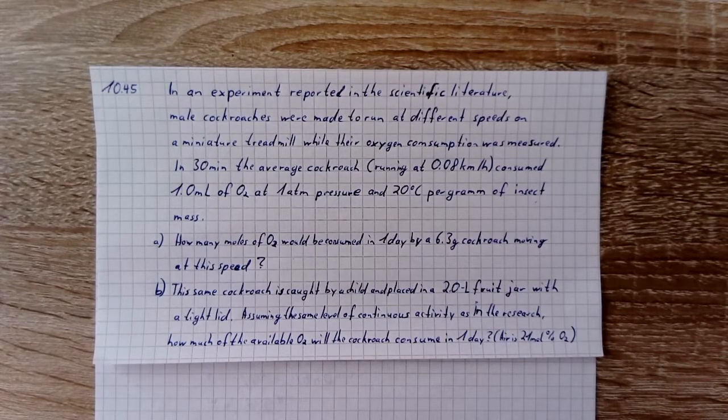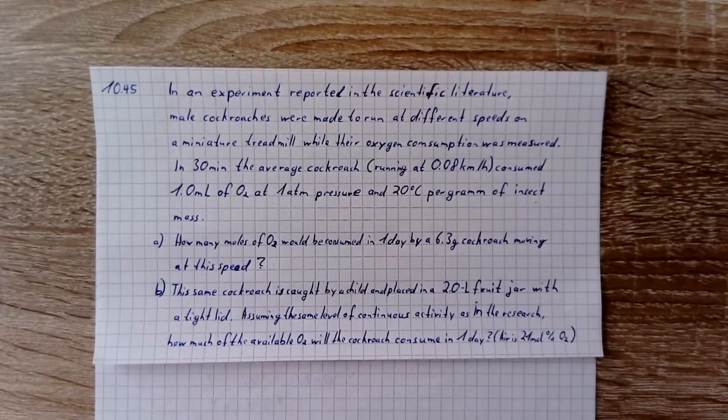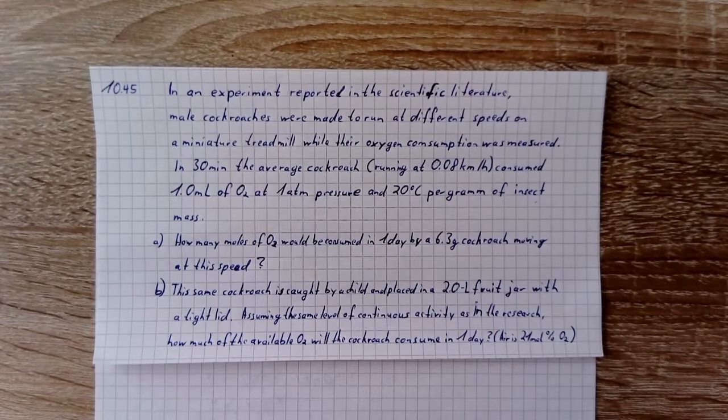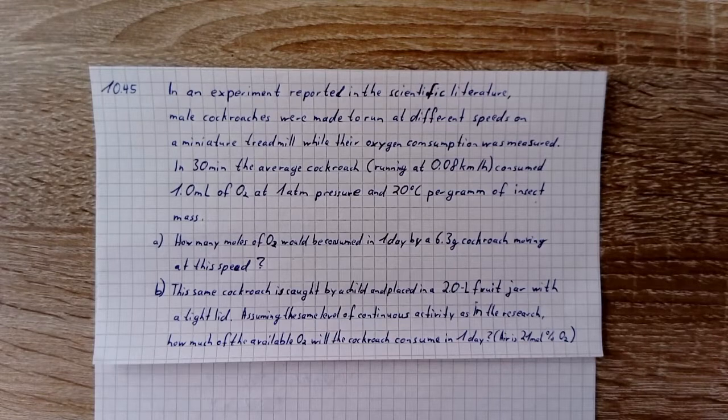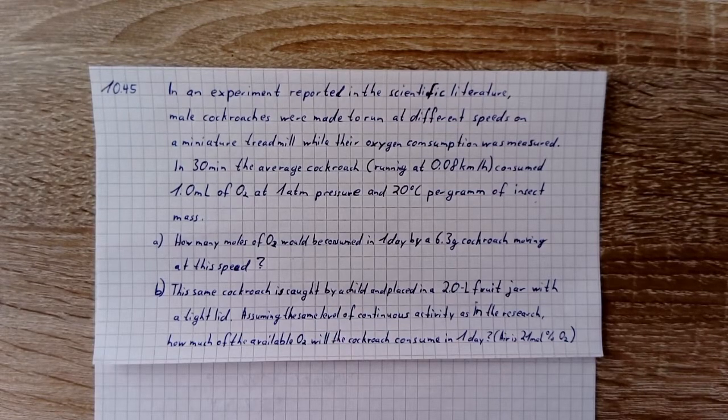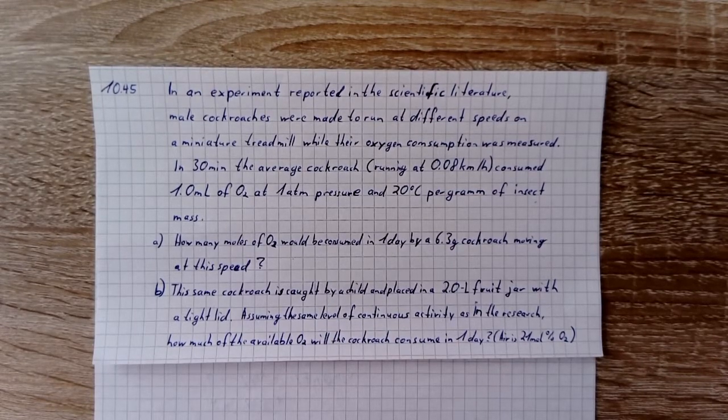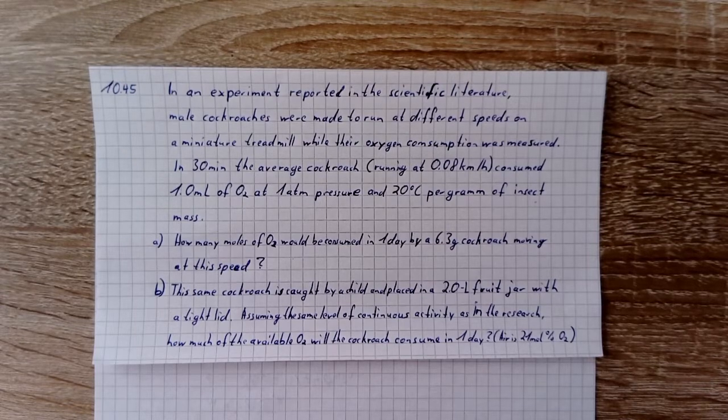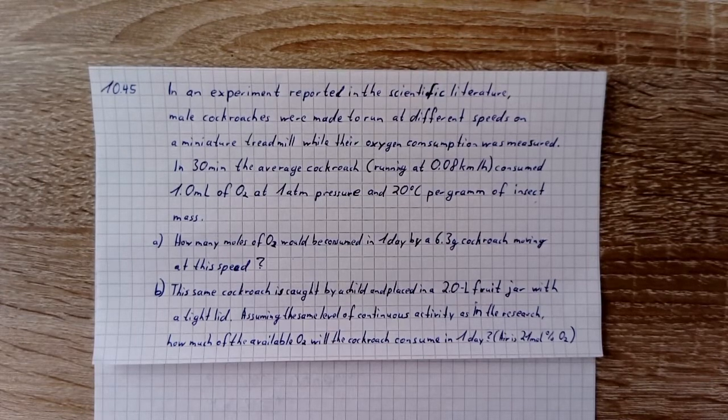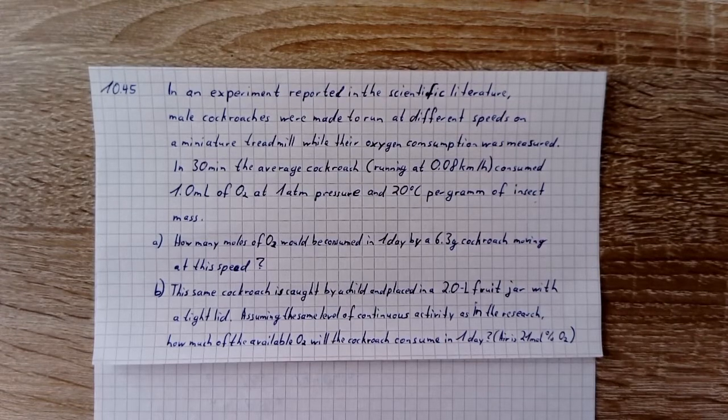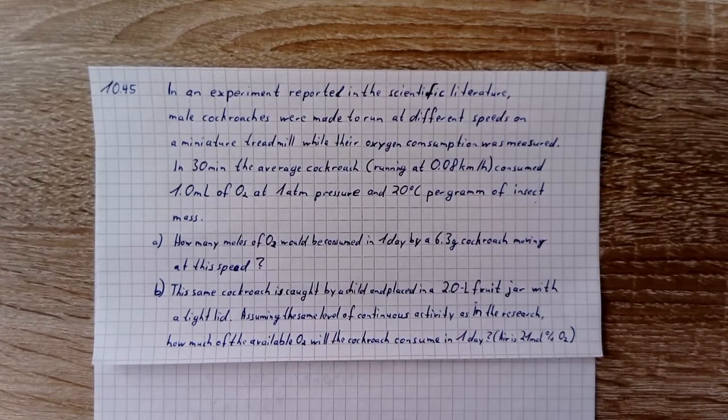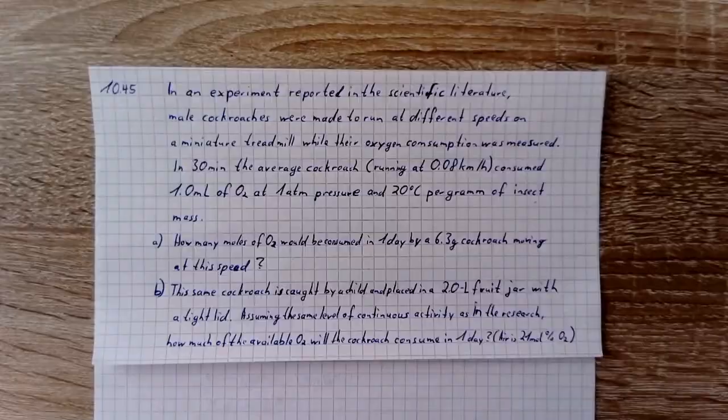This same cockroach is caught by a child and placed in a 2.0 liter fruit jar with a tight lid. Assuming the same level of continuous activity as in the research, how much of the available oxygen will the cockroach consume in one day? Air is 21 mole percent oxygen.